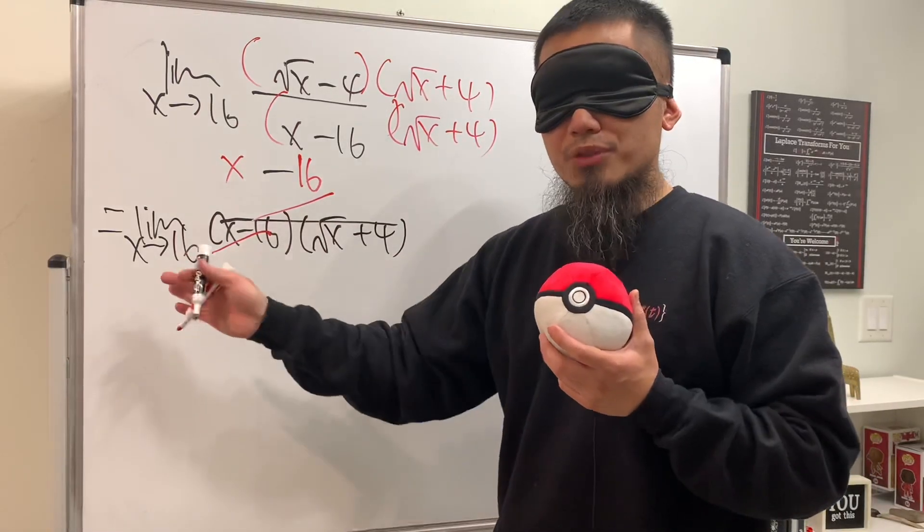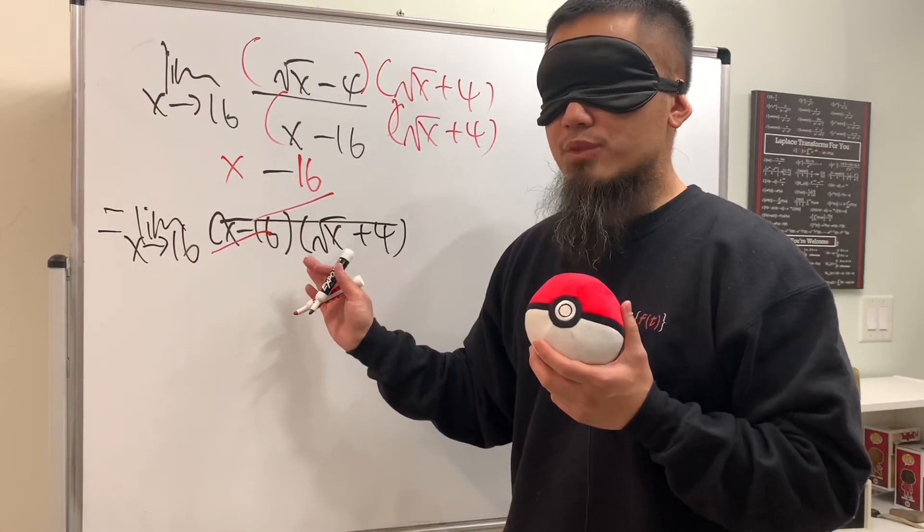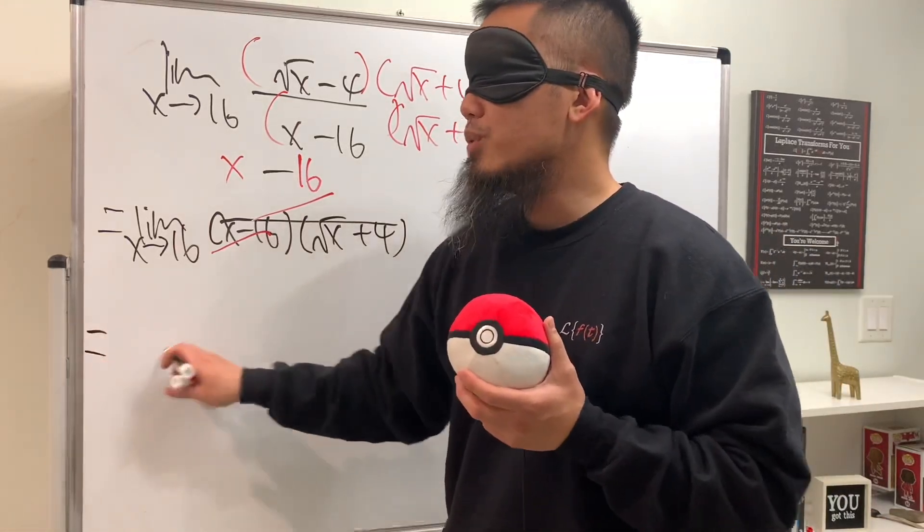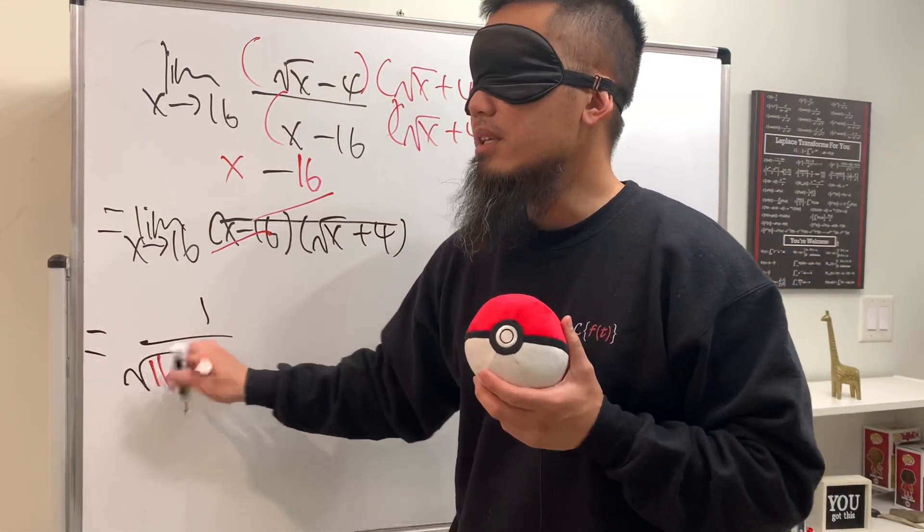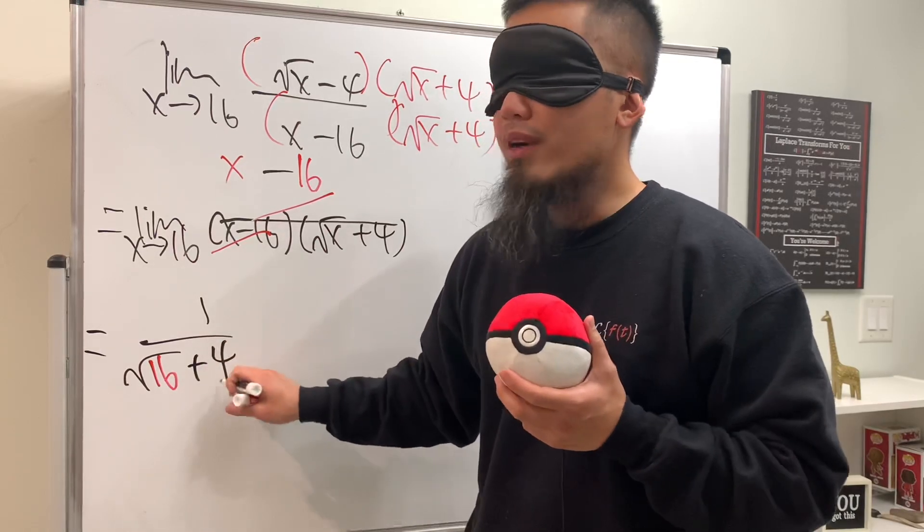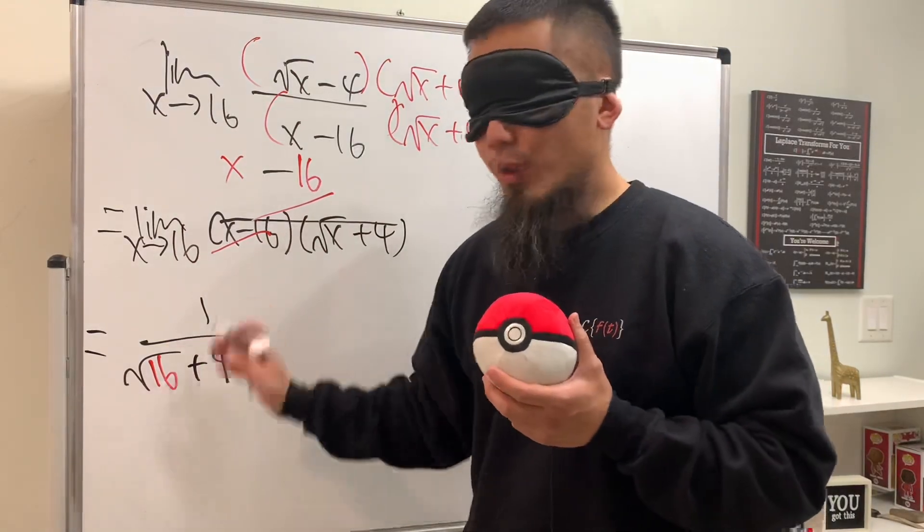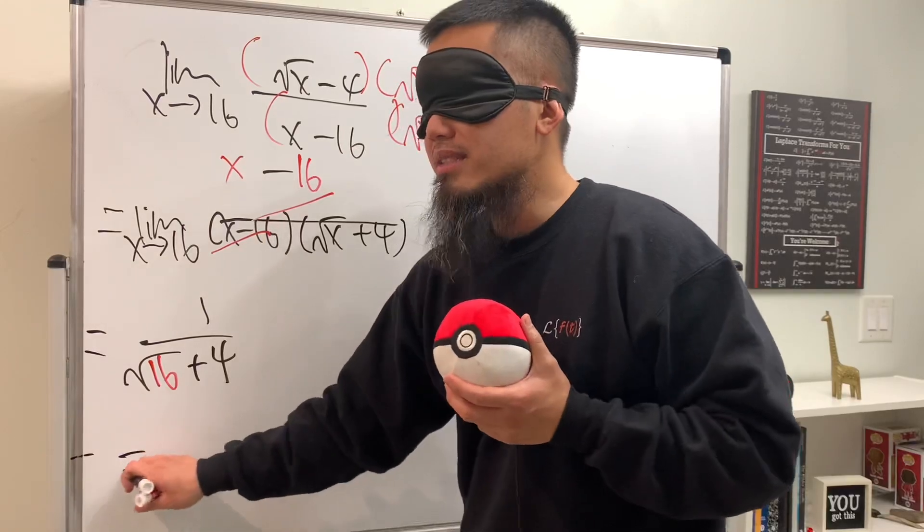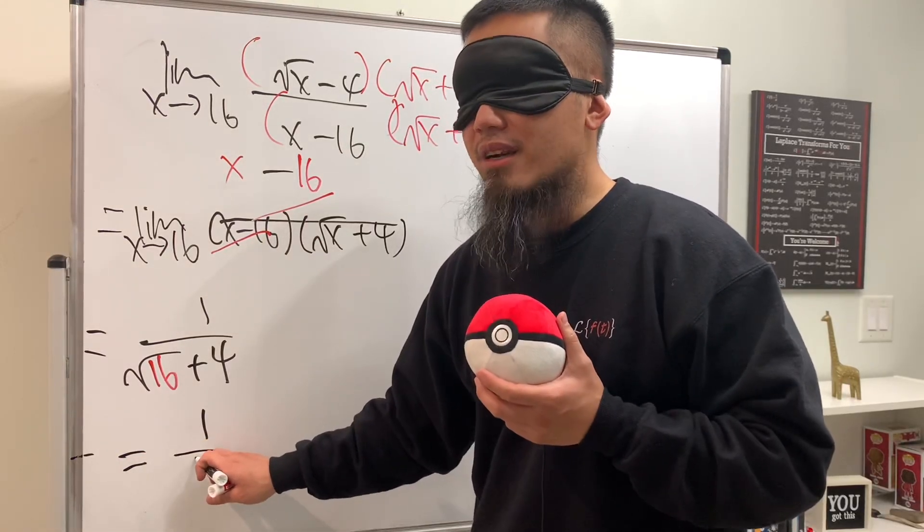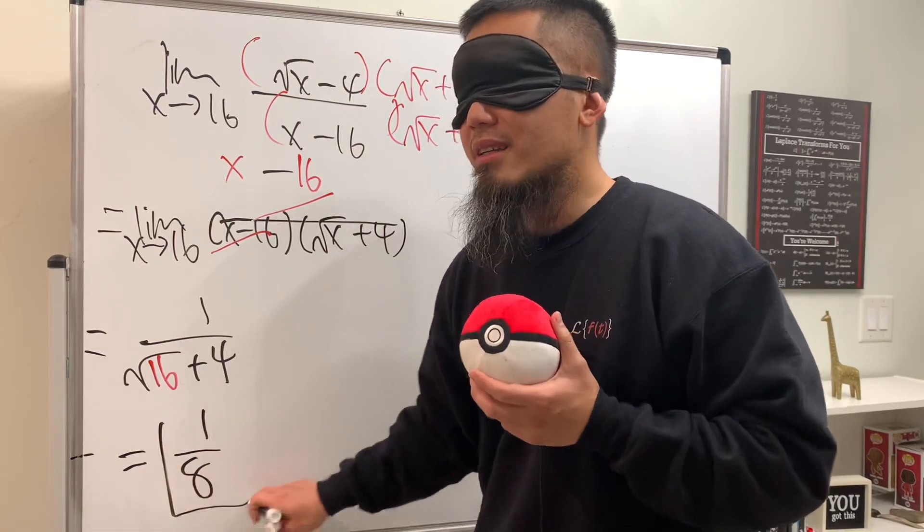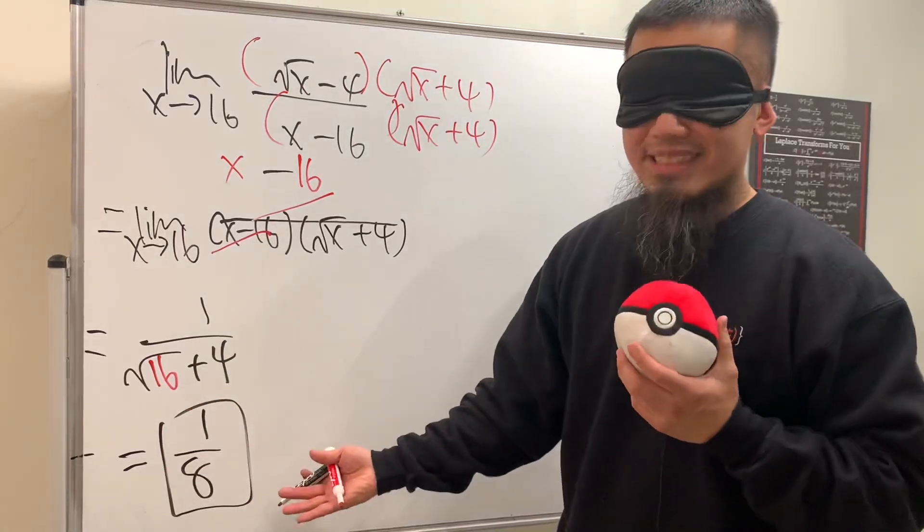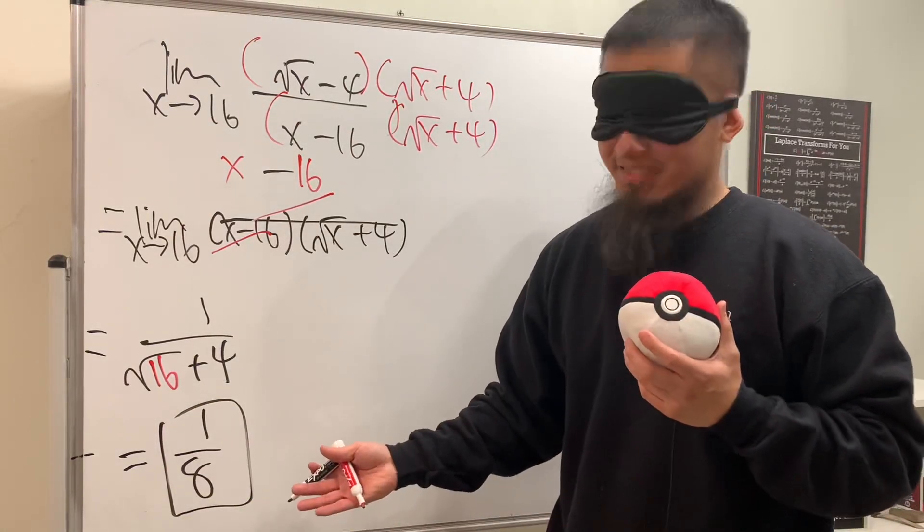And we're just going to plug in 16 to the remaining x right here. So you can see this is equal to 1 over square root of 16 plus 4, and ladies and gentlemen work that out, when we get a nice number that will be our nice answer, and the final answer is 1 over 8 as you guys can see. That's it.